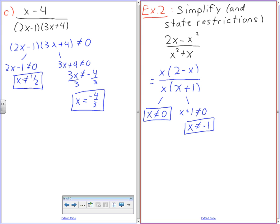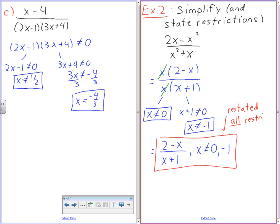Here's the happy part. The happy part of these questions are cancelling. What's common in the numerator and denominator? X. We're going to cross it. The x is completely the same. And what we're going to say in our final answer is 2 minus x all over x plus 1, where x cannot equal 0 and negative 1. What I did here was I restated all restrictions.